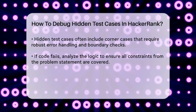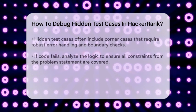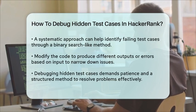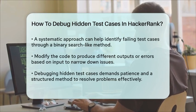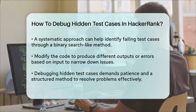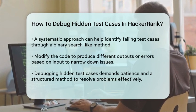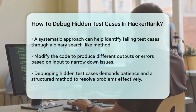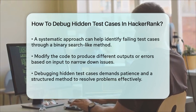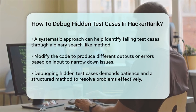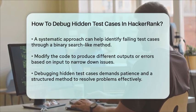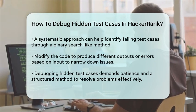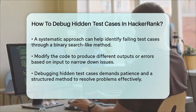In some cases, you might need to use a more systematic approach to narrow down the issue. For example, if you know your code is failing a specific test case but don't know which one, you can use a binary search-like approach to identify the failing test case. This involves modifying your code to throw runtime errors or produce different outputs based on the inputs, and then iteratively narrowing down the range of possible inputs until you find the one that's causing the failure.